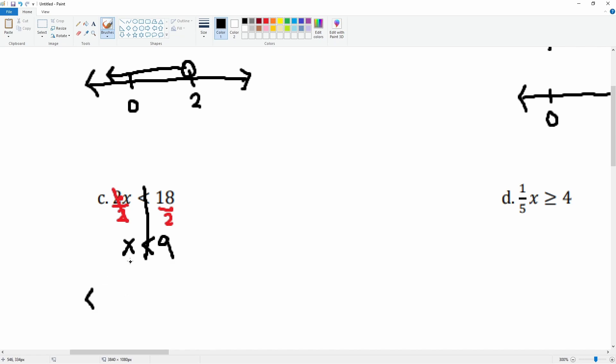So here it reads that x is less than 9. Here's the number 9, here's the number 0. It is an open circle. Since x is less than 9, we go to the left because the numbers get smaller on the left hand side.